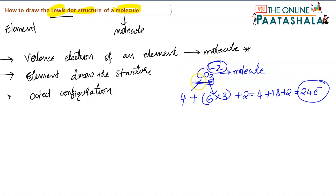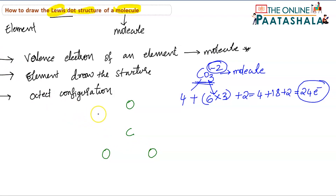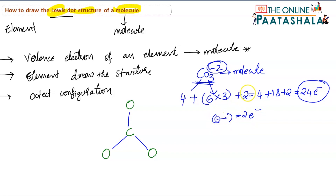So there are 24 electrons in the CO₃²⁻ molecule. Now, carbon will be in the center, with one oxygen here, one oxygen here, and one oxygen here. As we know, between any two atoms we will have a single bond, so I have drawn a single bond between each atom. A single bond represents two electrons.